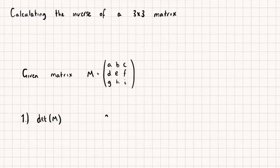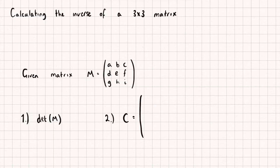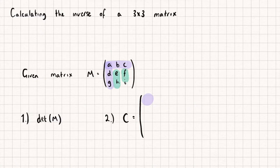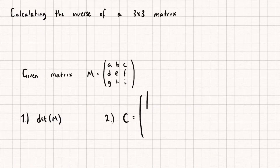The second step is we need to find what we call the cofactor matrix — I'll use the letter C to represent that, and this is going to be a 3x3 matrix. The top left element of this new matrix can be found by removing the rows and columns of the top left element of our matrix M. We're left with four elements, and we find the determinant of those — the determinant of E, F, H, and I.